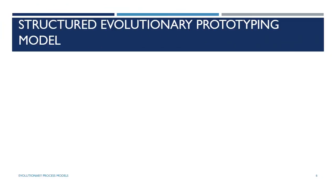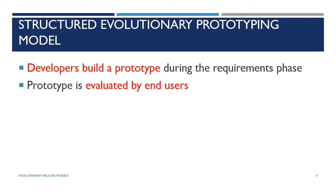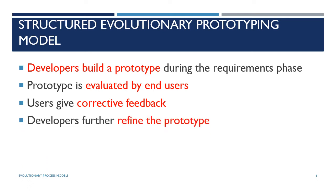Now, the structured evolutionary prototyping model: developers build a prototype during the requirements phase. Requirements are collected from customers. A prototype is built and then evaluated by end users. Users give corrective feedback, and developers further refine the prototype based on that feedback.